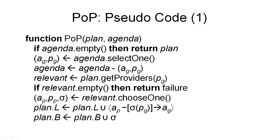We now get to the pseudo-code for our partial order planner — essentially the algorithm implemented by the UCPOP planning system. The algorithm is a little more complex than those seen previously, so it is distributed over two slides. What we define here is a function POP, which implements our partial order planner. This function takes two arguments: firstly, a partial order plan, which initially is our initial plan pi zero; and an agenda consisting of all the unsatisfied sub-goals in our current plan. In our initial plan, these are only the preconditions of the goal dummy action.